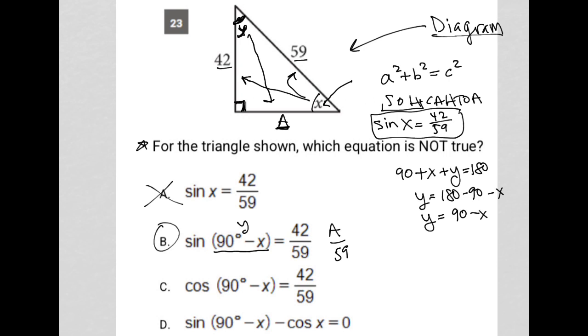Choice C, the cosine of 90 minus X, again, would be the cosine of Y. Let me just erase all this stuff here. Make that a Y again. The cosine of Y would be adjacent, 42, over hypotenuse, which is exactly what we have. So that's definitely true.